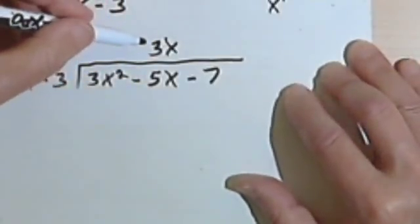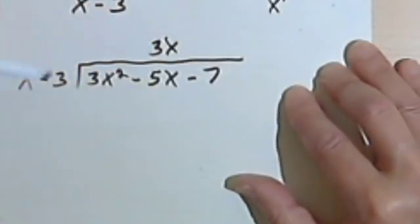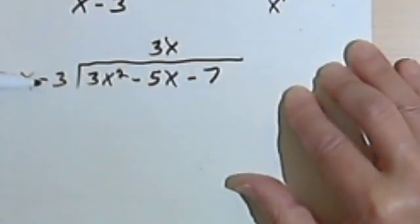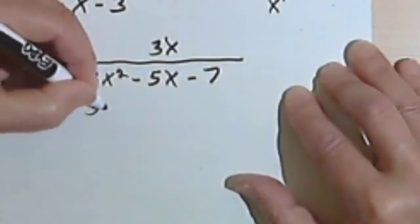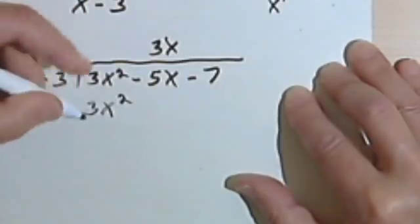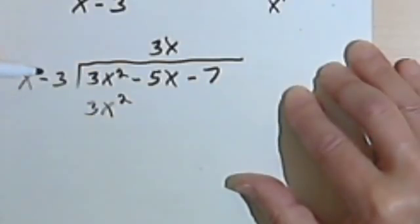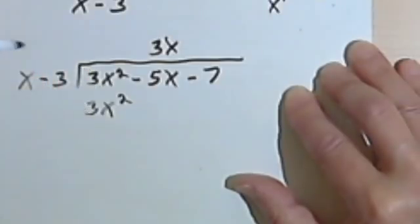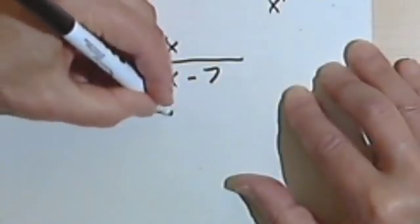And now, as in regular long division, I'm going to take this 3x and multiply it by the divisor. So in effect, I'm going to distribute 3x across x - 3. So 3x times x is going to be 3x². And this is a good time to check your work. These two numbers, these two terms, should be exactly the same. If they're not, go back and find out where you made a mistake. Then I'm going to take the 3x and multiply it by -3, and that'll give me a -9x.